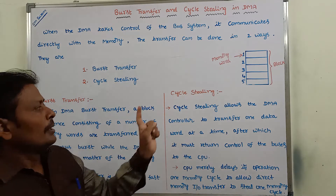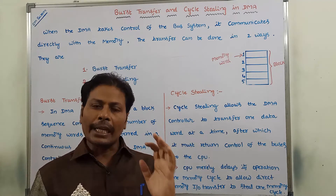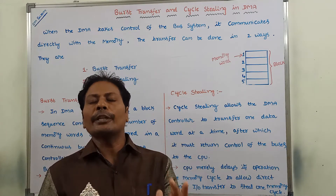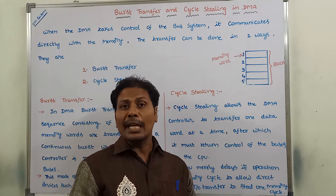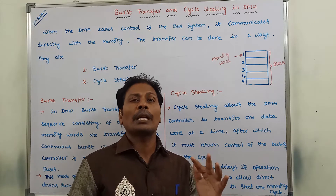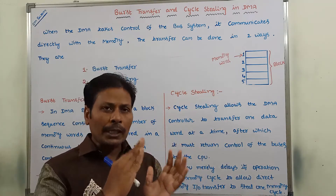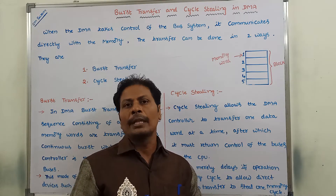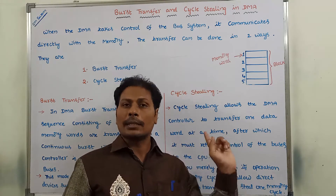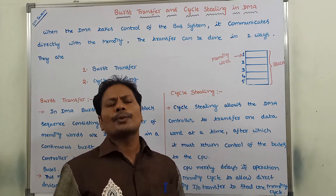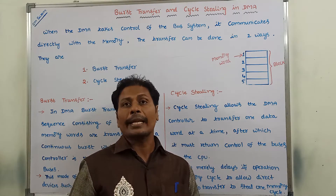In the case of cycle stealing, at a time only one memory word can be transferred from the IO peripheral device to the main memory through the DMA controller. After transferring one memory word, it hands over the buses to the CPU. So the CPU merely delays one memory cycle.